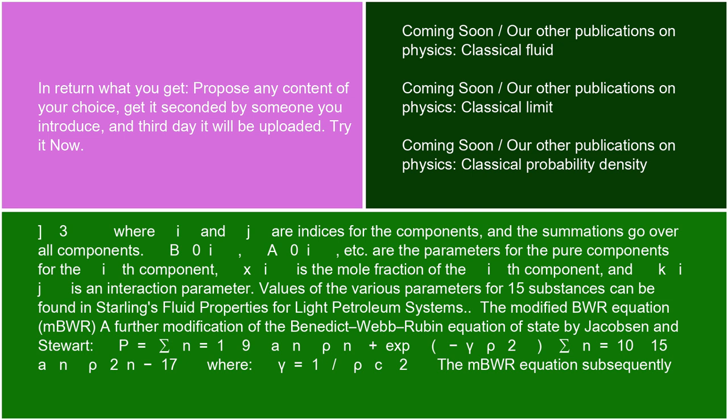The modified BWR equation (mBWR), a further modification of the Benedict-Webb-Rubin equation of state by Jacobson and Stewart: P = Σ(n=1 to 9) aₙρⁿ + exp(-γρ²) Σ(n=10 to 15) aₙρ^(2n-17), where γ = 1/ρc².